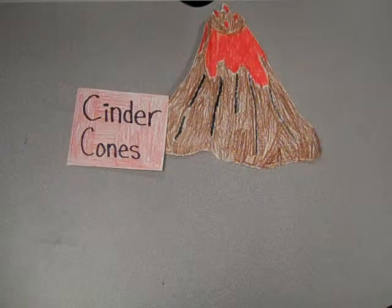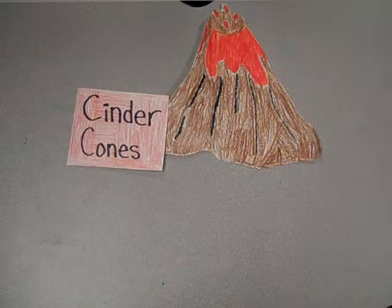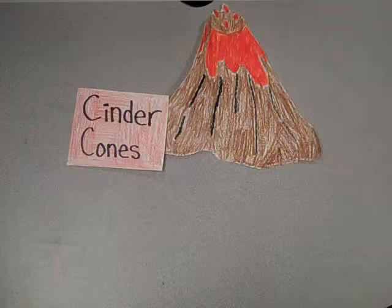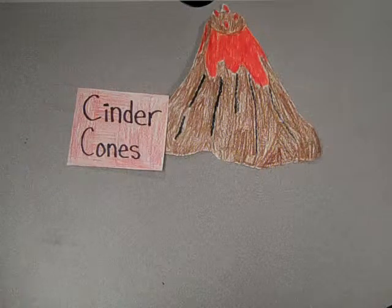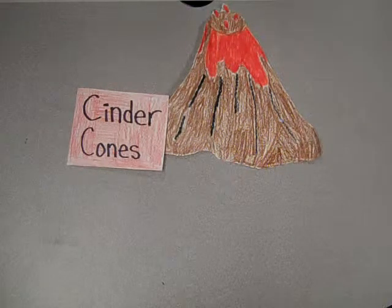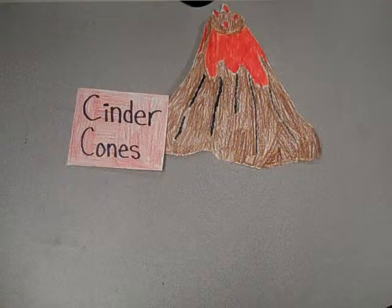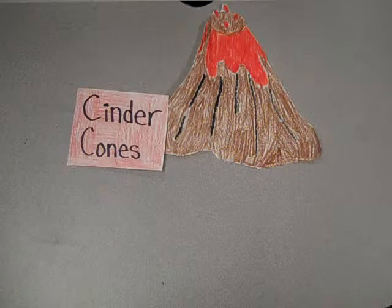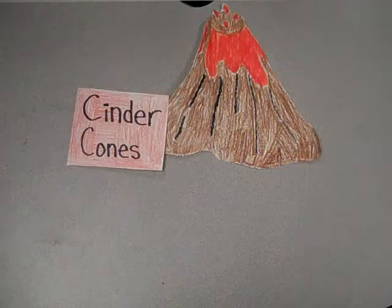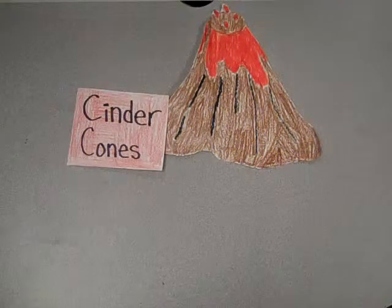Cinder cones are built from lava fragments called cinders. Lava fragments are ejected from a single vent and accumulate around the vent when they fall back to earth. Cinder cones grow rapidly and soon approach their maximum size. They rarely exceed 250 meters in height and 500 meters in diameter.